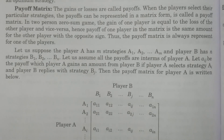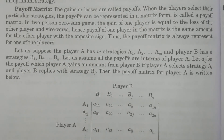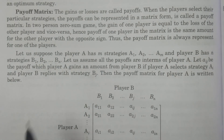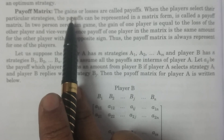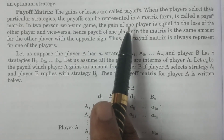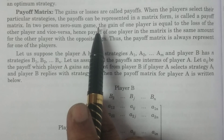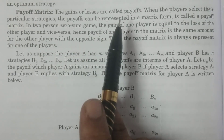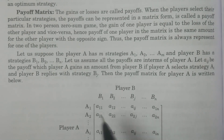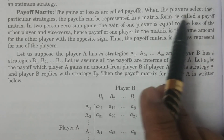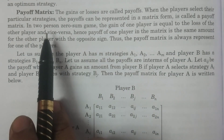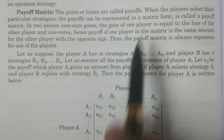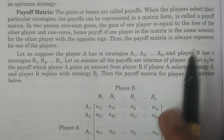In this class, payoff matrix is an important definition in game theory. Payoff matrix is simply called payoff. In terms of money, when the players select their particular strategies, the payoff can be represented in a matrix form, which is called payoff matrix.